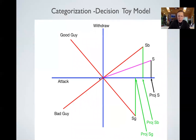Here's our axis representing the decision to attack or withdraw — the blue axis — and here's our axis representing the categorization, good or bad guy. If you've already made up your mind that it's a bad guy...